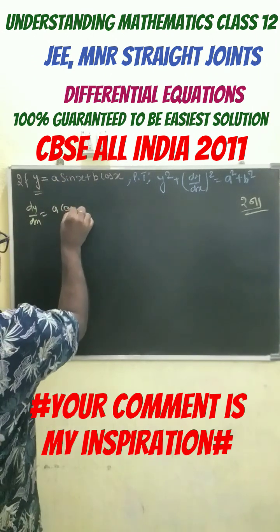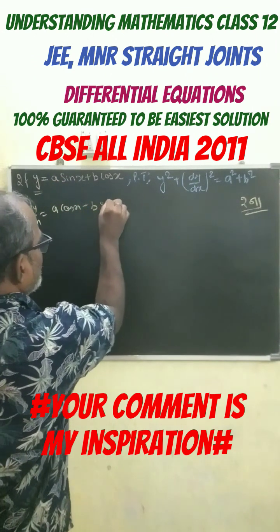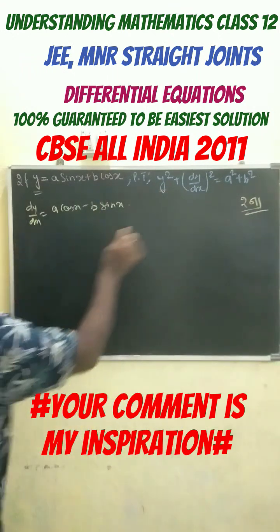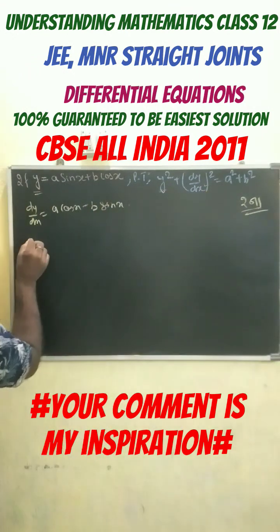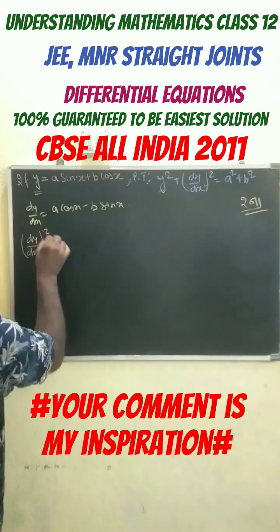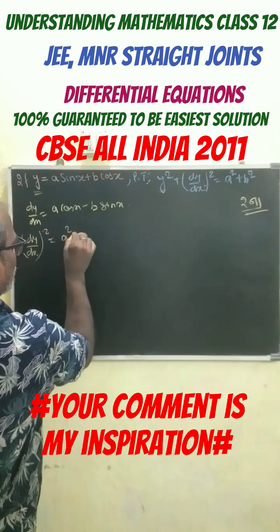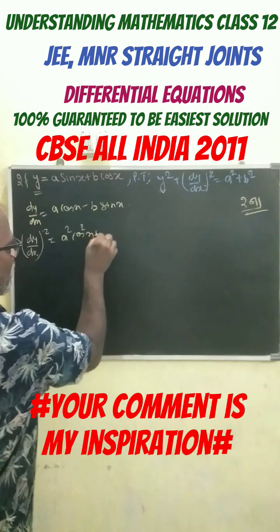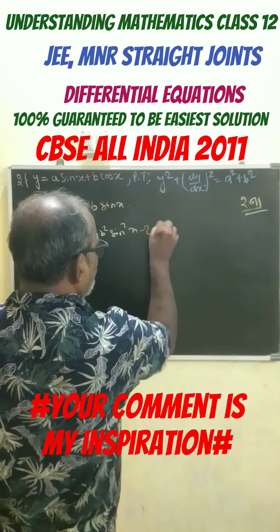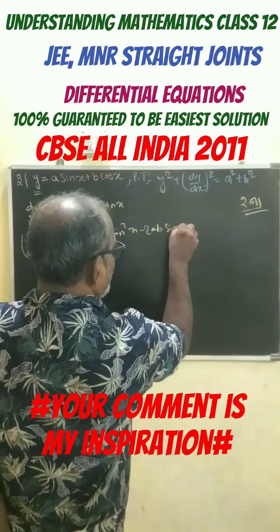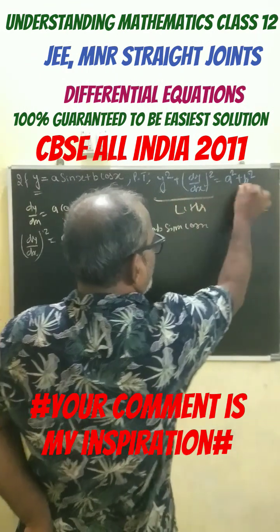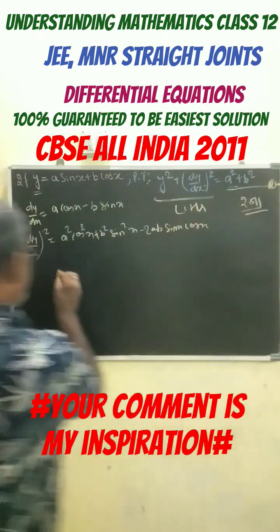This becomes a cos x minus b sin x. What we need is y squared and dy by dx whole squared. So, squaring both sides, we get a squared cos squared x plus b squared sin squared x minus 2ab sin x cos x.